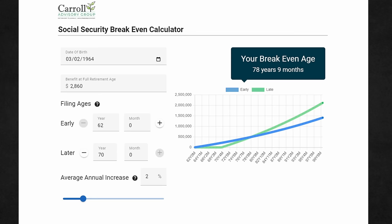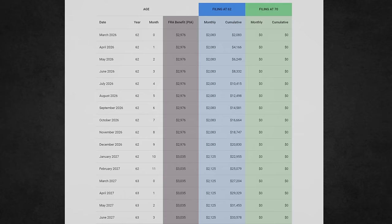Already you can see the results in the bubble: 78 years and nine months. If we scroll down, you can see the actual math behind those numbers.